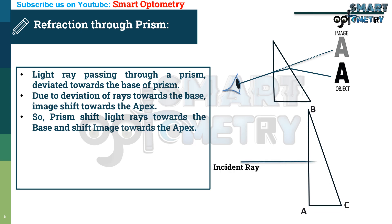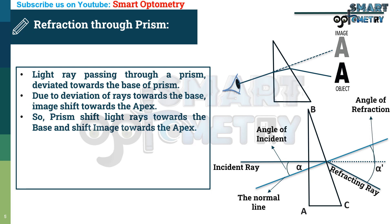Here in this figure, this is the incident ray. This is the refracting ray. This is the continuation of incident ray which is imaginary. And this is the normal line that is perpendicular to the surface B and C. The angle between the incident ray and the normal is called angle of incident. And the angle between the normal and refracting ray is called angle of refraction. The angle between the imaginary continuation of incident ray and refracting ray is called angle of deviation.